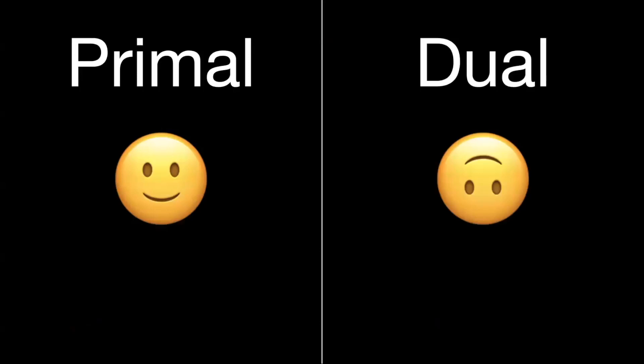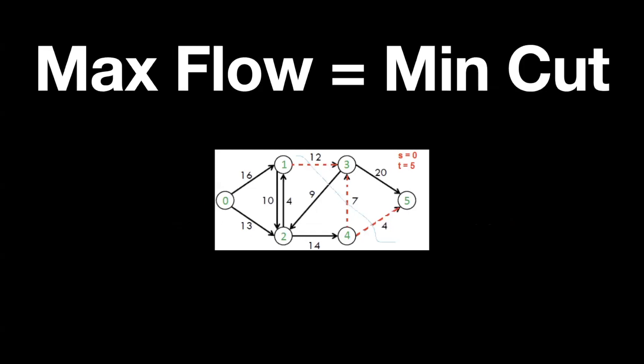Every linear program has an 'evil twin' known as the dual linear program. Duals have very interesting properties — they have essentially the same optimal value as the primal but get there in a totally different way. For example, the problem of finding the maximal flow over a network is equivalent to finding the minimum cut of that network, essentially because of linear programming duality.